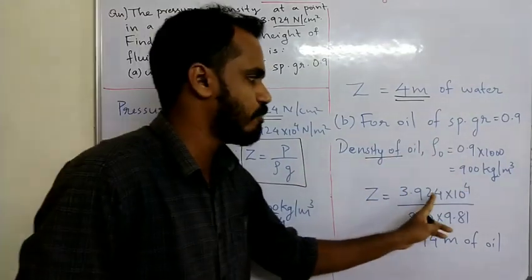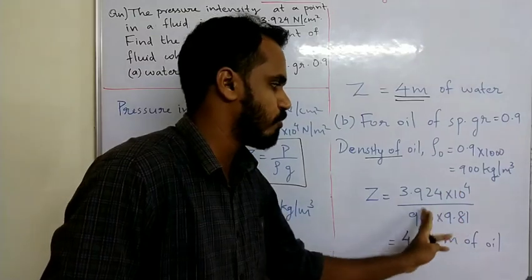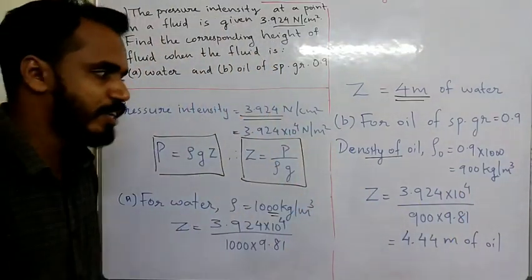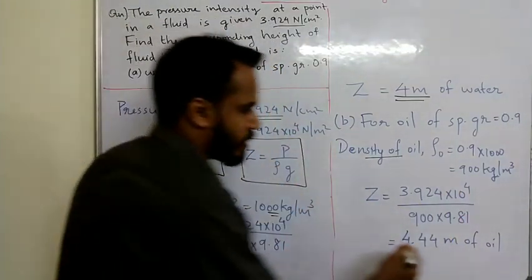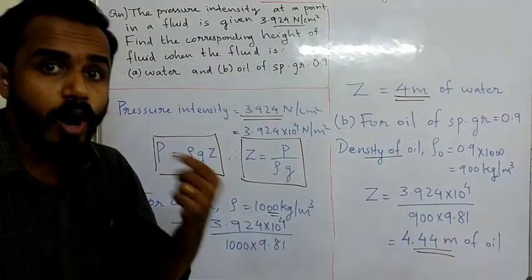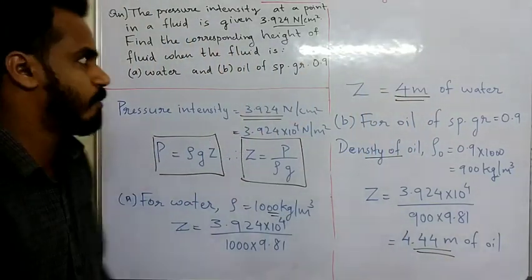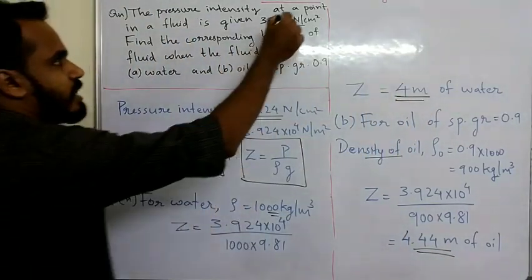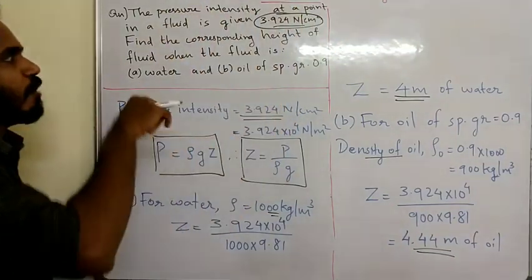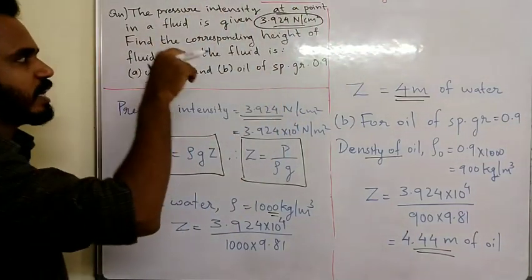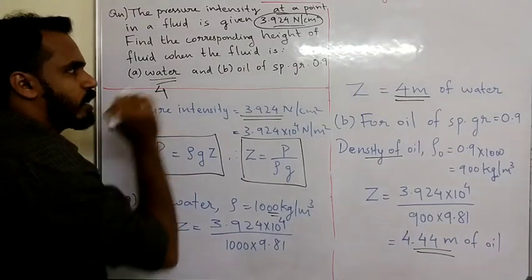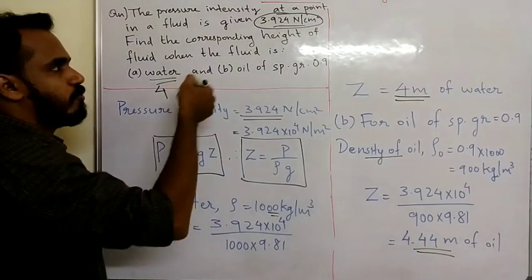For oil of specific gravity 0.9, density is 900 kg/m³: Z = 39,240 / (900 × 9.81), giving a height of 4.44m of oil.